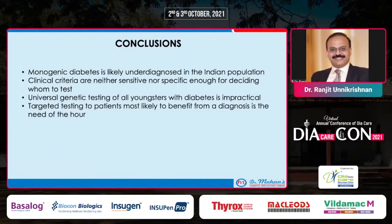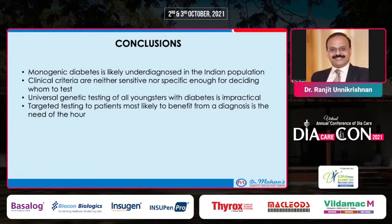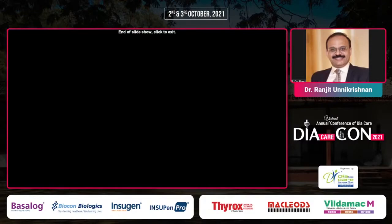In conclusion, monogenic diabetes is likely underdiagnosed — but that is the case everywhere in the world. Clinical criteria are not sensitive or specific, having been developed at a time when young-onset type 2 diabetes was uncommon. Universal testing, though ideal, is impractical. We need targeted testing to identify patients most likely to benefit, conserving scarce resources and ensuring that testing reaches those who will benefit maximally.